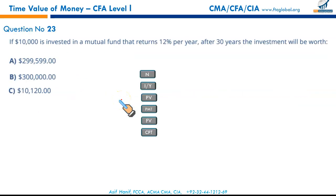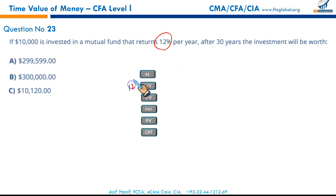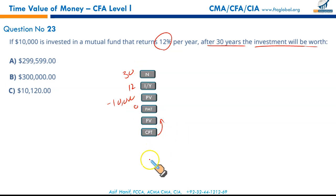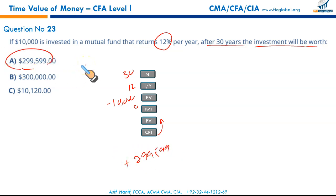If $10,000 is invested in a mutual fund that returns 12% per year, after 30 years the investment will be worth — very straightforward. PV = $10,000, PMT = 0, I/Y = 12%, N = 30 — compute FV. You will get $299,599. That makes A the correct option.